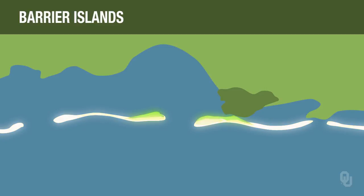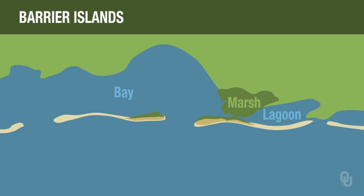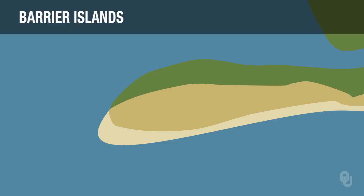Today we will discuss barrier islands. What are barrier islands? They are thin, long islands that are separated from the mainland by a bay, lagoon, or marsh, and they're separated from each other by tidal inlets. Major parts of a barrier island include the beach, the dunes, and the marsh.